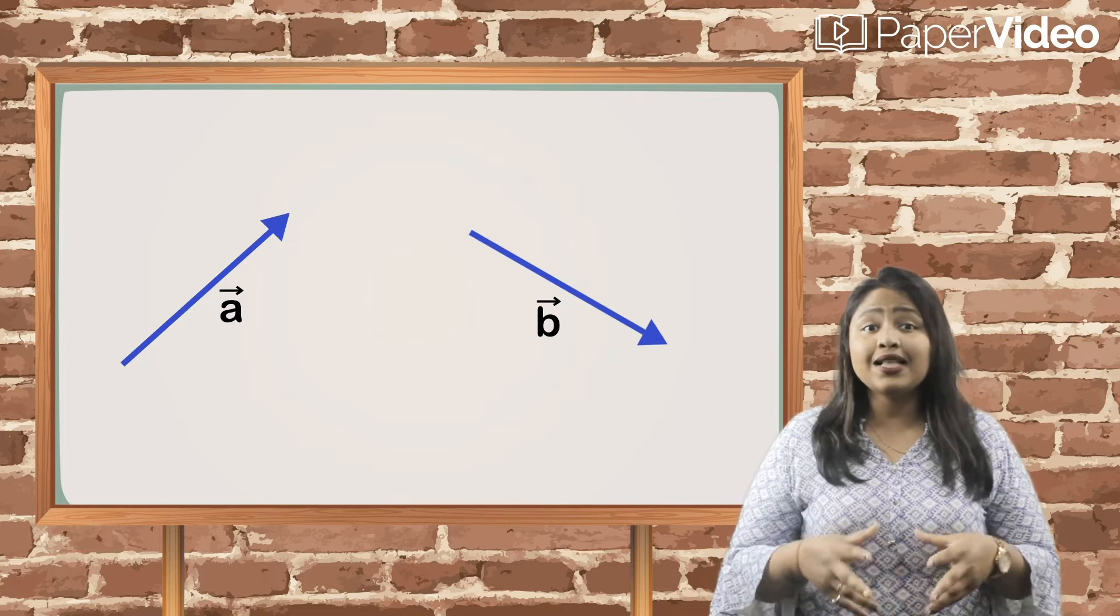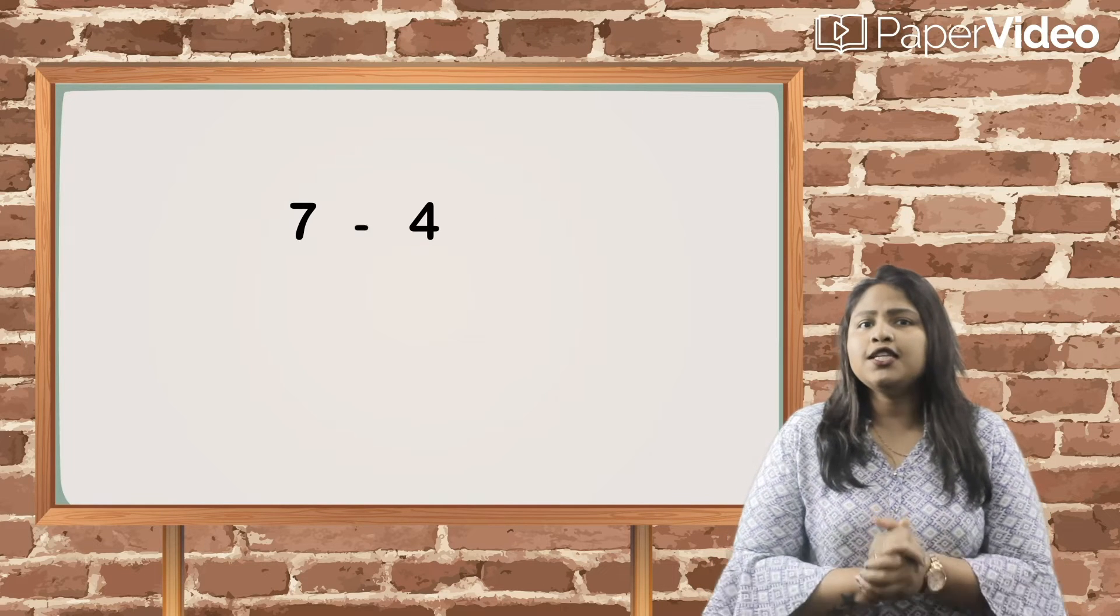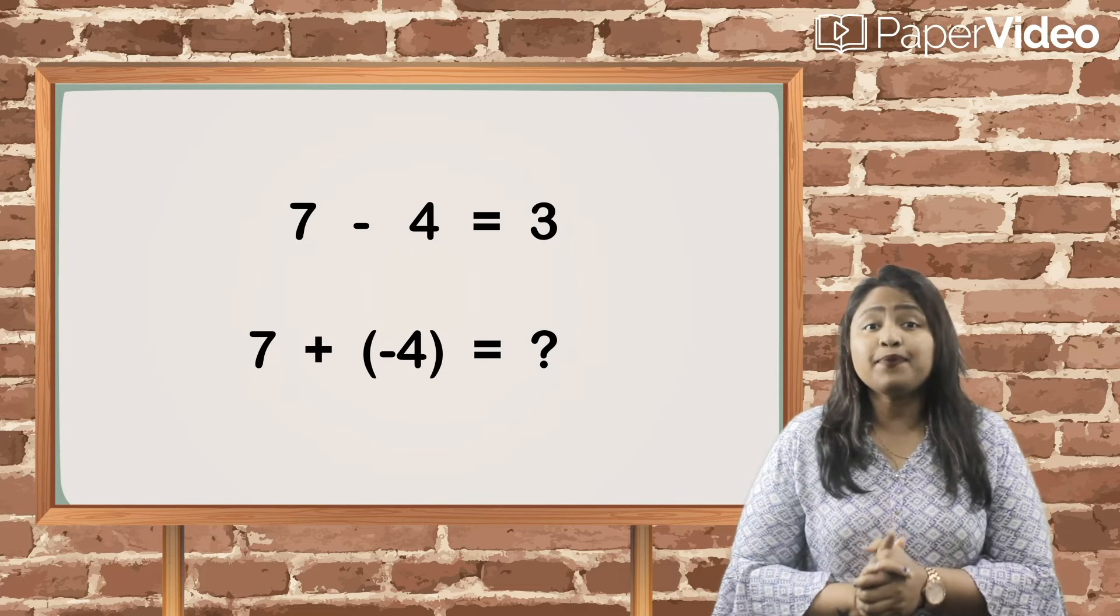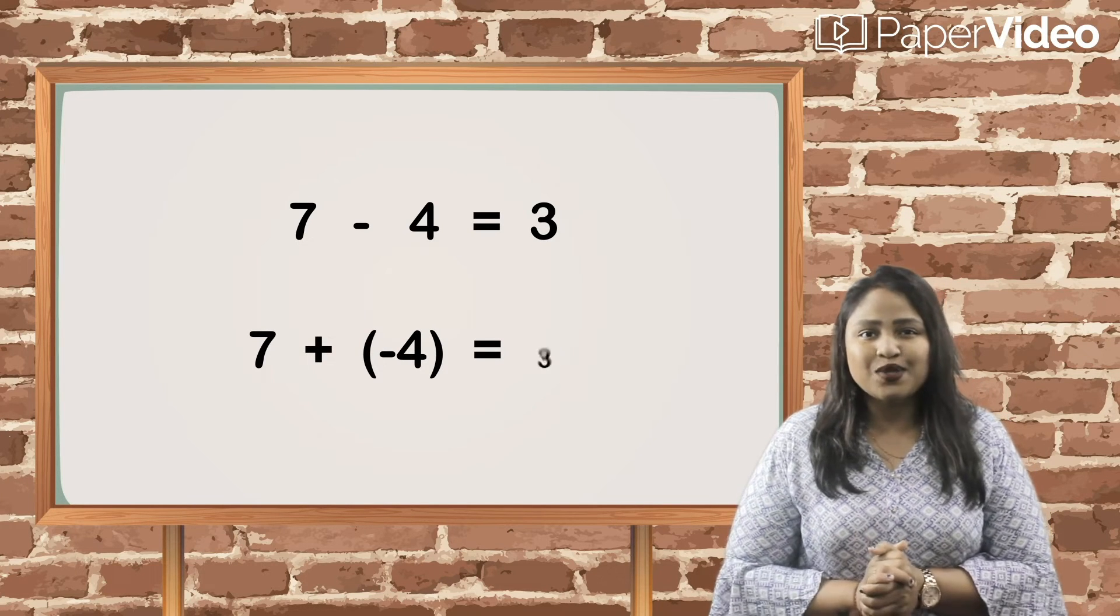To understand this, consider two numbers 7 and 4. The difference between 7 and 4 is 3. What will be 7 plus minus 4? It is also equal to 3.